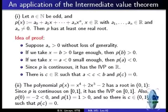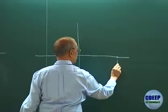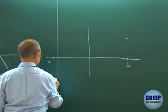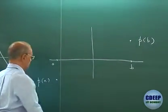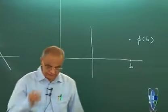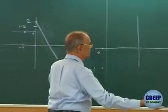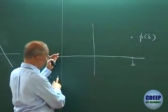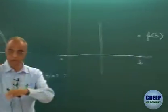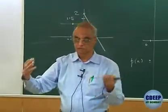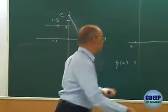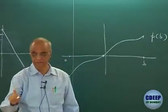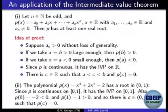At b the value of the function is positive, at a the value is negative — this is p(b) and p(a). The polynomial p is a continuous function. So it has the intermediate value property. If the value at a is negative and at b is positive, every value between p(a) and p(b) is taken. In particular, since one is negative and one is positive, the value 0 is in between — so it is taken. This means the graph cuts the axis at least once, and every odd-degree polynomial has a real root.